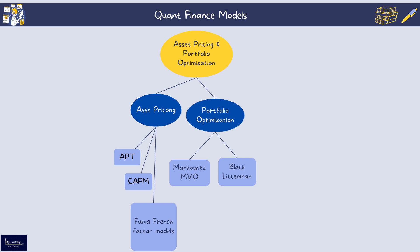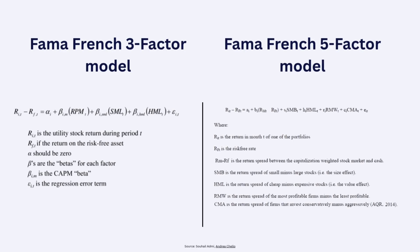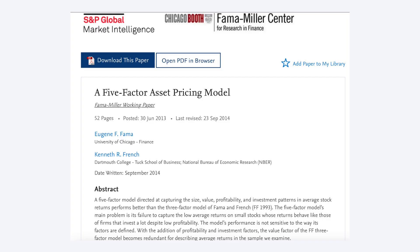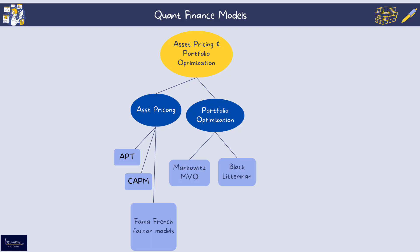Another very common model is the Fama-French Three or Five Factor Model — an extension of CAPM that includes size and value factors (small vs. large companies and high vs. low book-to-market ratios) to better explain asset returns. When learning this model, you can also replicate the original Fama-French research paper, which gives a good idea of how the model works and what kind of data fits into it.